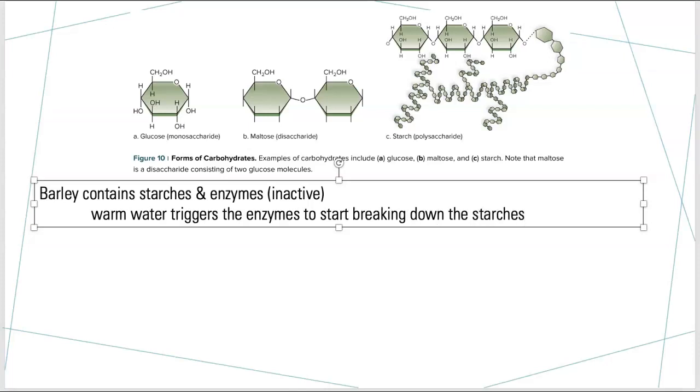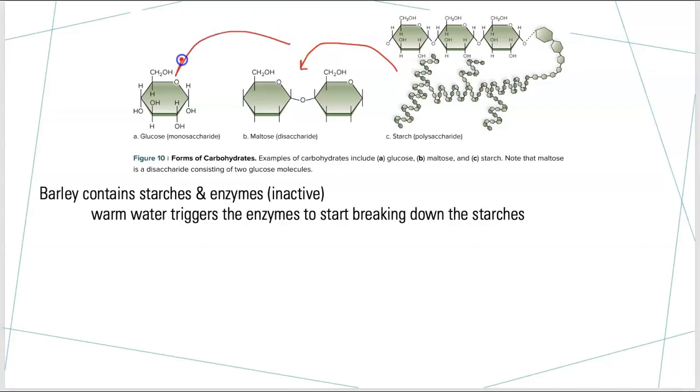The warm water triggers the enzymes to - all right, so that warm water we put it in starts triggering the enzymes to break down the starches. The starches will break down, and the goal is to take the starch, bring it back to a disaccharide, to bring it back to a monosaccharide. Ideally, let's get it down to glucose. That's where we want to be when we're moving through this pathway, this process.